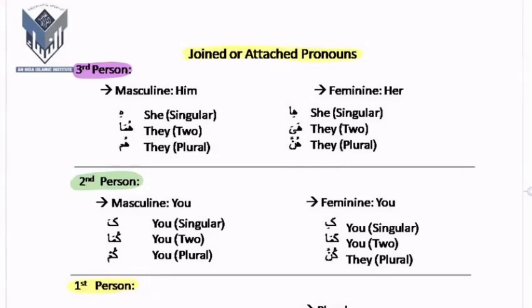Today I will be briefly talking about the joint or attached pronouns. In the last session we talked about the pronouns which were detached — they were separate, not joining the word itself. But now we are talking about the pronouns which actually cling to the word itself. Like the example of kitabika — the 'ka' which is a pronoun is actually attached to the word 'kitab', and there we get the meaning of the pronoun itself.